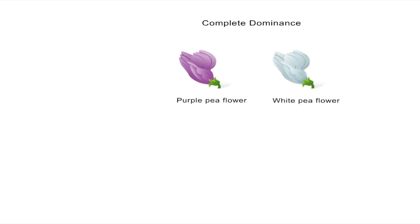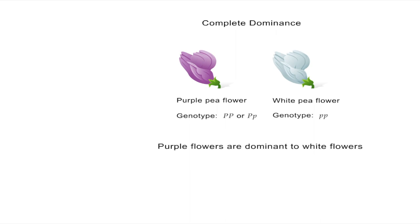In his studies involving pea plants, Gregor Mendel described phenotypic traits in which one allele was dominant to a recessive allele. He showed that with complete dominance, the phenotype of the heterozygote is the same as that of the homozygous dominant. Since Mendel's discovery, we have seen that many allelic pairs do not show complete dominance.